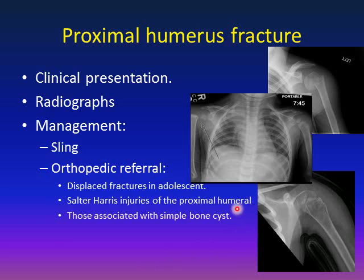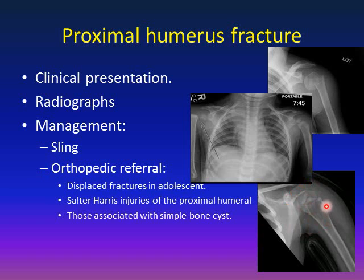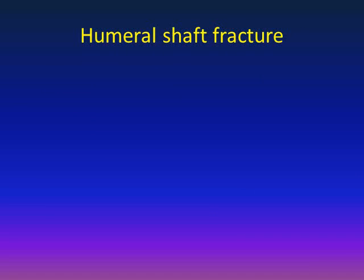The third indication for orthopedic referral is a proximal humerus fracture occurring on a simple bone cyst. If you see these X-rays, there is a cyst in the proximal humerus — an osteolytic lesion — with a small fracture in that area. Fractures occurring through a simple bone cyst should be referred to an orthopedic surgeon.